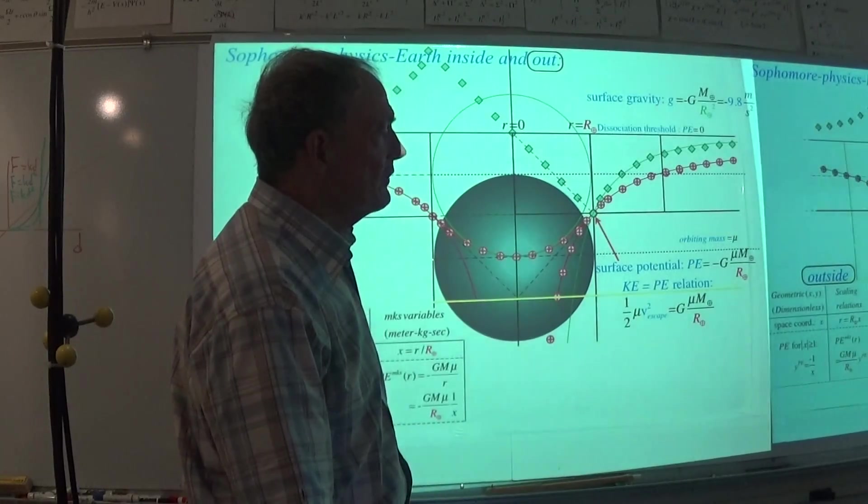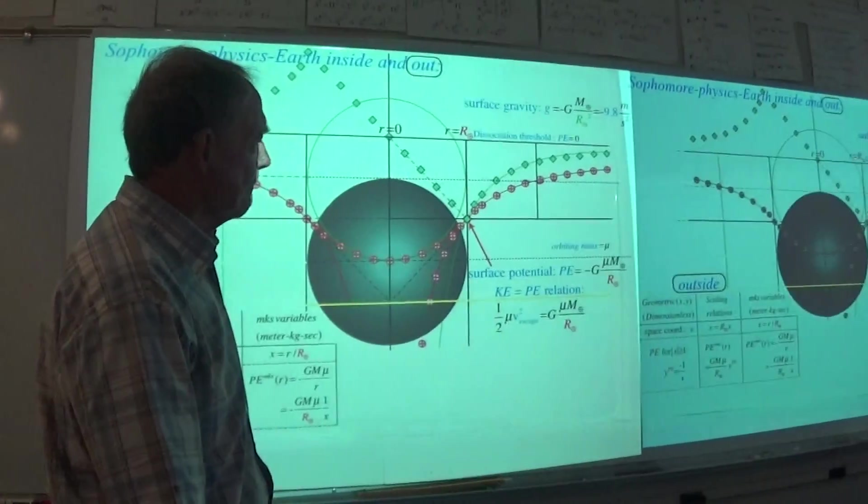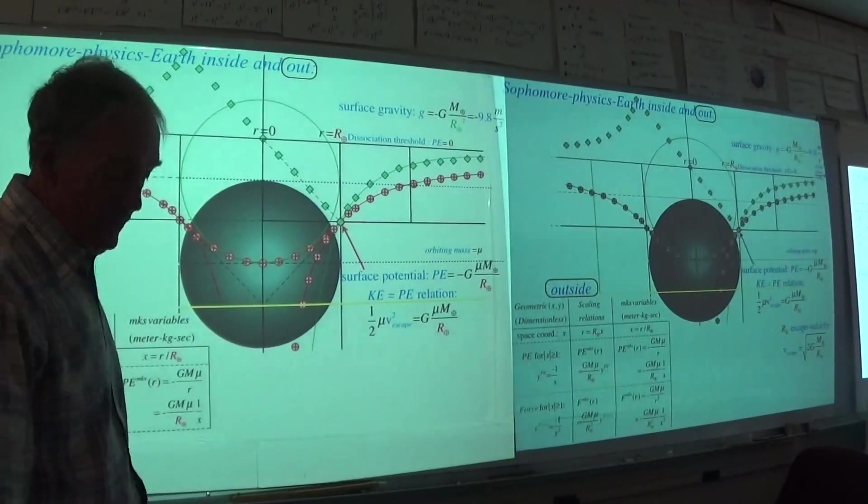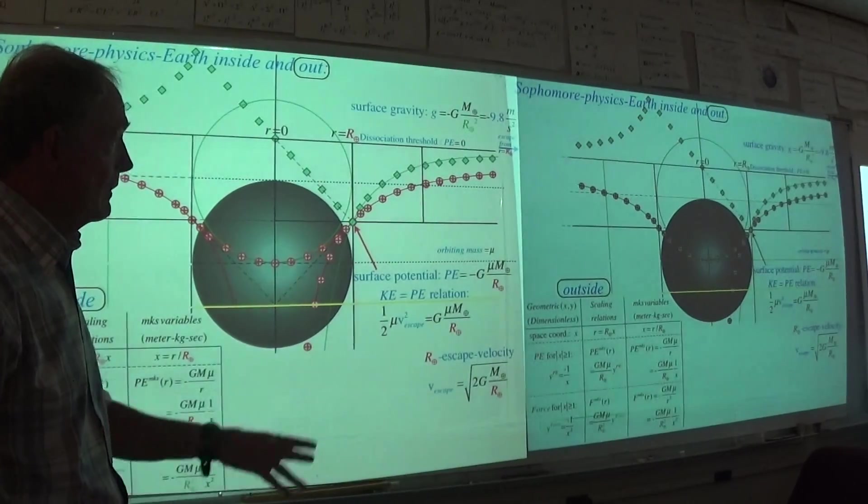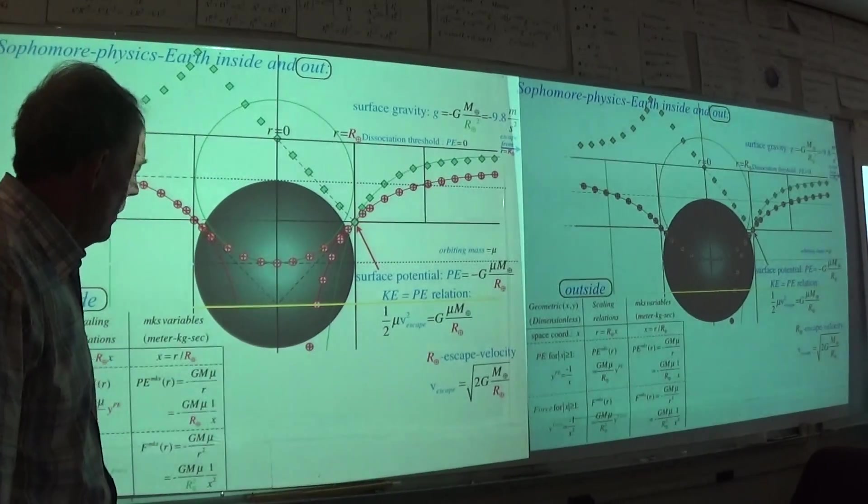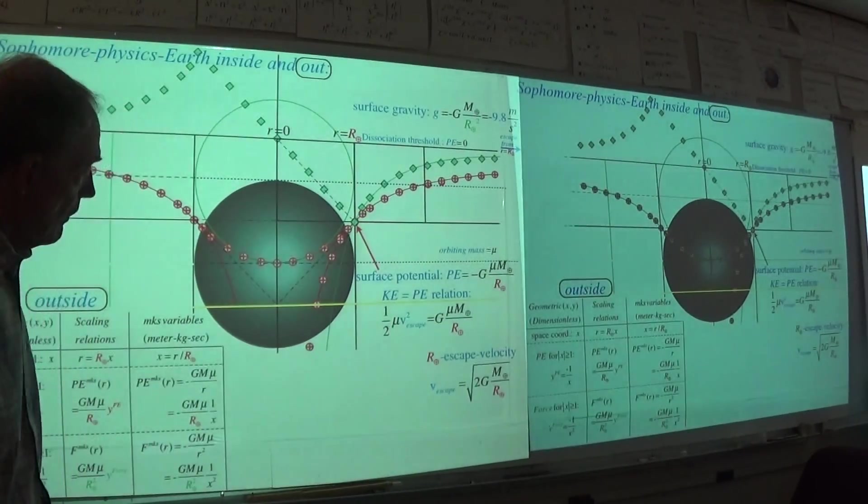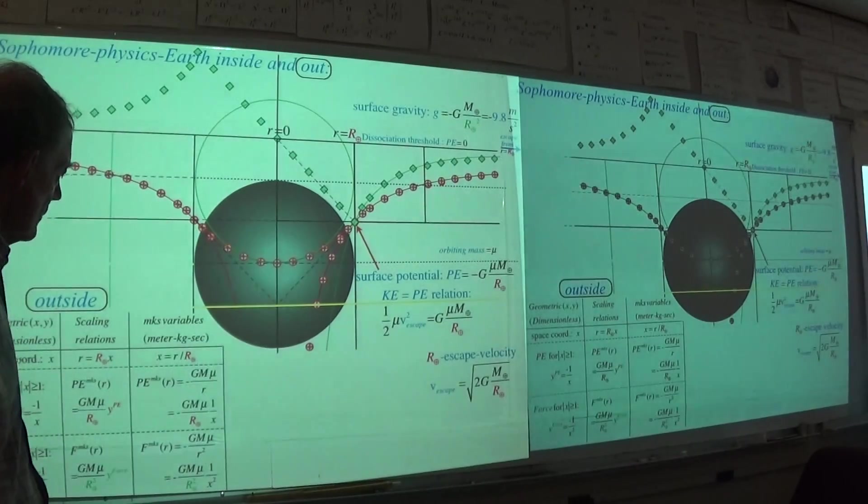So let's go ahead and do that. That's velocity escape is the square root of something. And this is, I'm going ahead on this one as well. I'm going to mostly use these two screens for all of this, all of these formulas.